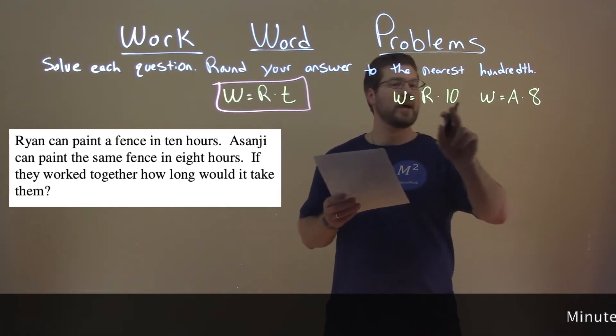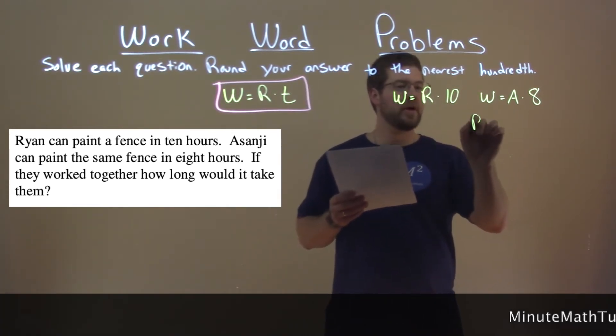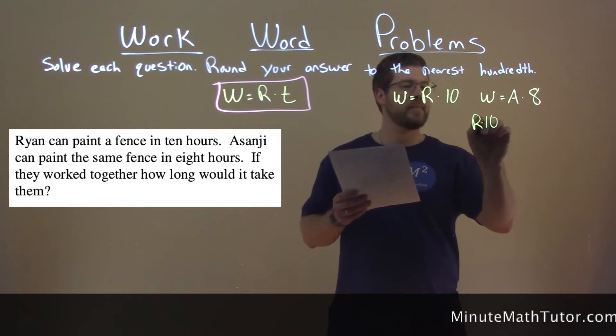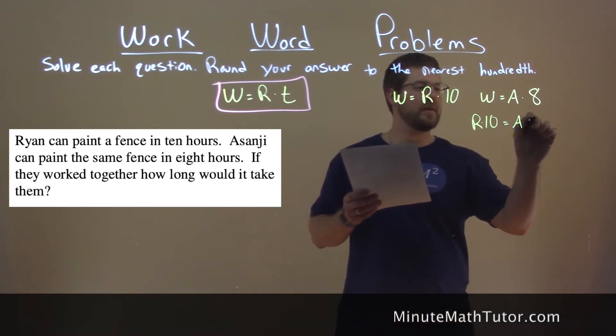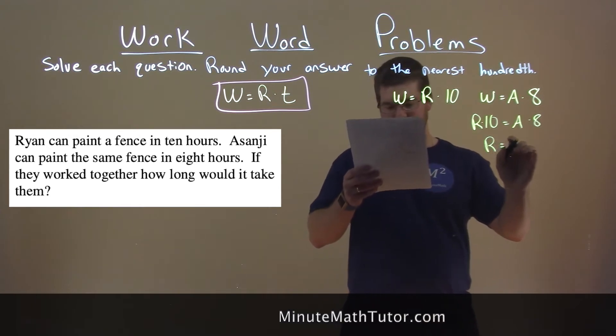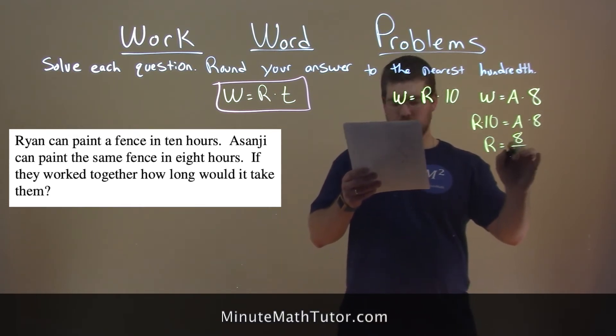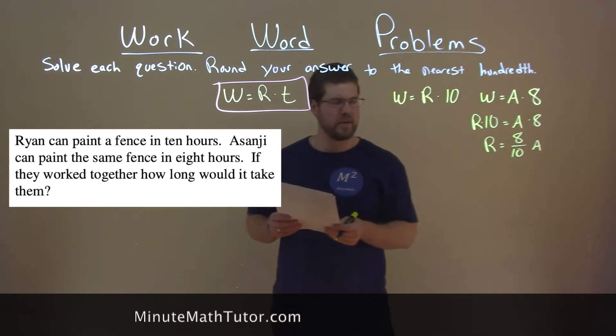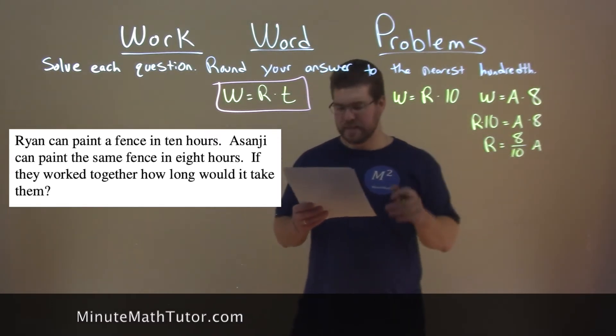We can combine these two together, because they're both equal to W, and R times 10 is equal to A times 8, and R by itself is equal to 8 over 10 times A, and you can simplify if you want to, but I'm going to leave it like this so we can see it.